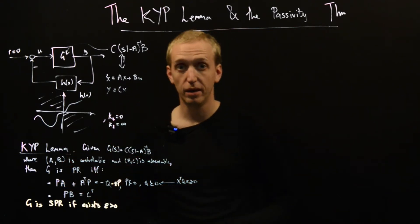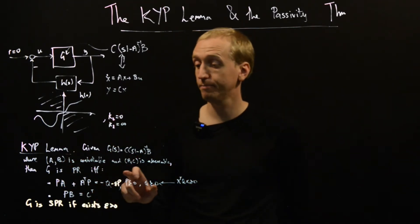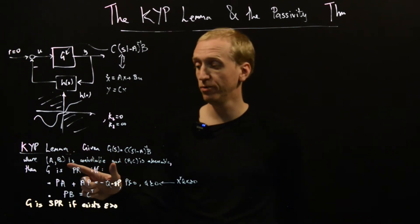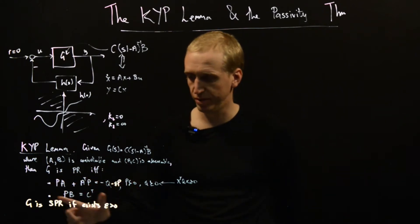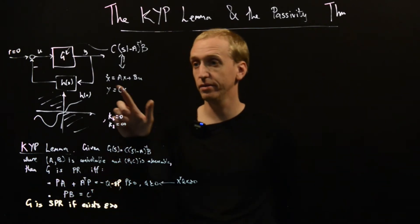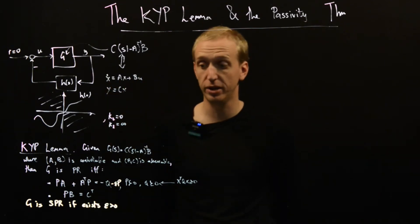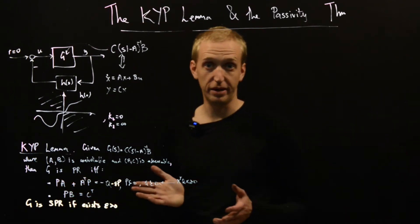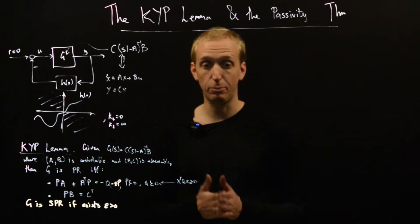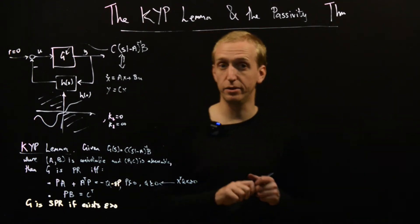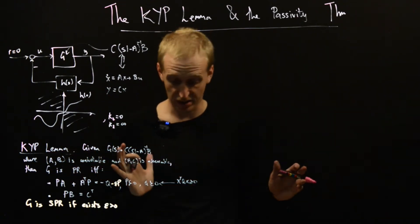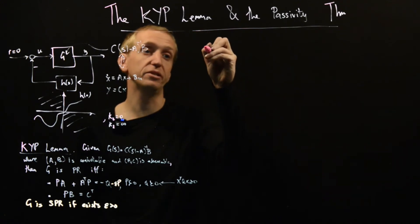This is the KYP lemma. It's connecting those positive real and strictly positive real transfer functions that we saw before to the solutions of particular equations involving the realization of our transfer function. The key thing it's giving us here is this matrix P, and this is going to play the role of our Lyapunov function. We're now going to try and prove what is arguably the main result of this whole lecture, which is something called the passivity theorem.